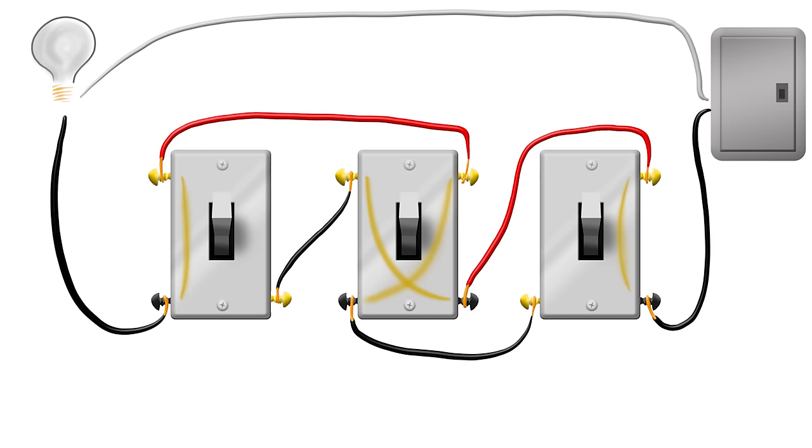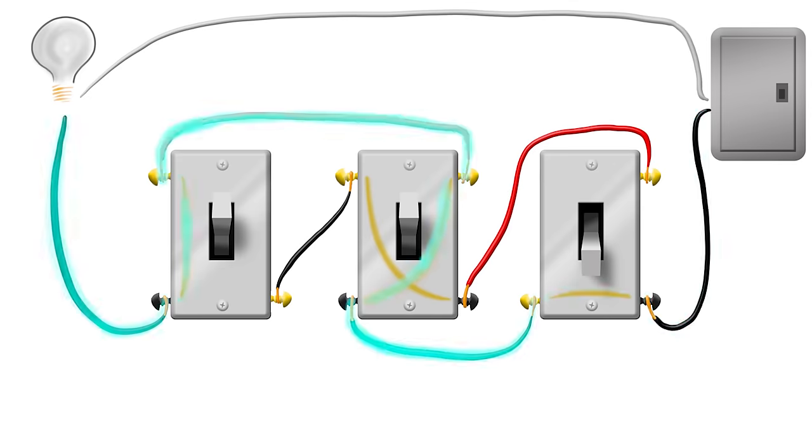Say you're on one end of the hallway and we've got this switch switched in the down position. So now we have a constant path all the way through the three-way, all the way through the four-way, and out through this three-way. So the light turns on.